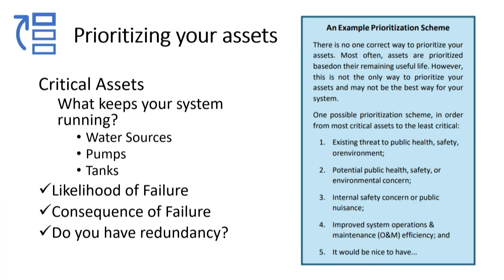Once you've collected all the assets and components, you go to prioritizing them. You have to first go with what's critical — what makes everything tick, what makes the water flow. On basic considerations, we know it's our water sources, which are the hottest commodity for us right now. Trying to obtain or increase water sources is extremely difficult at this moment. So that's a critical asset — you want to protect it. The pumps to get water where it's going, and the tanks holding this commodity — and in the case of elevated storage, supplying your pressure — these are critical assets.